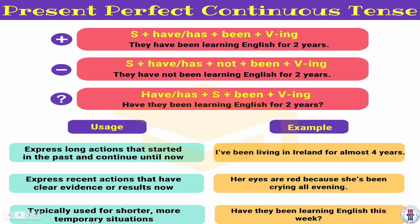For temporary situations — temporary means not for a very long time. Let's say you're learning English: 'Have they been learning English this week?' A week is not a long time. When you talk about situations that are temporary, short times, we usually use the present perfect continuous.